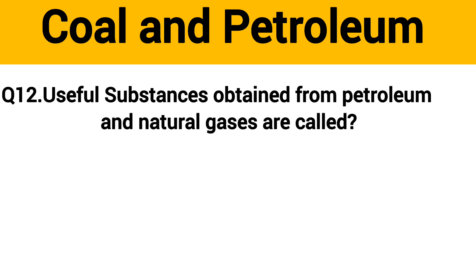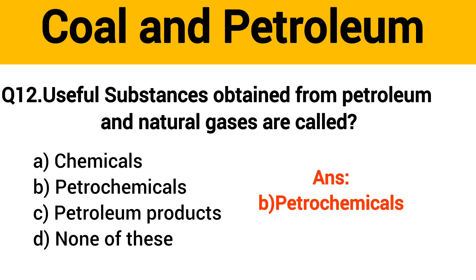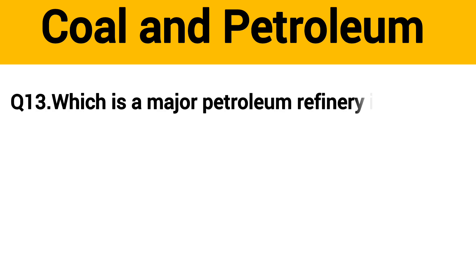Question No. 12. Useful substances obtained from petroleum and natural gases are called ___. The right answer, Option B: Petrochemicals.